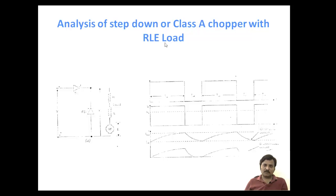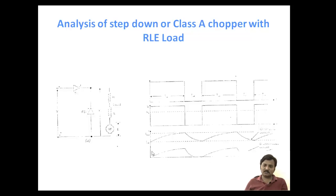Now we consider the analysis of step-down or class A chopper with RLE load. When the load is RLE — or a DC motor is connected — the back EMF acts as a source. Depending on the inductance L, the current behavior changes: if L is large, we get continuous conduction mode; if L is small, we get discontinuous conduction mode. For class A chopper, voltage polarity is positive and current polarity is positive — that is why it operates as a first quadrant chopper.